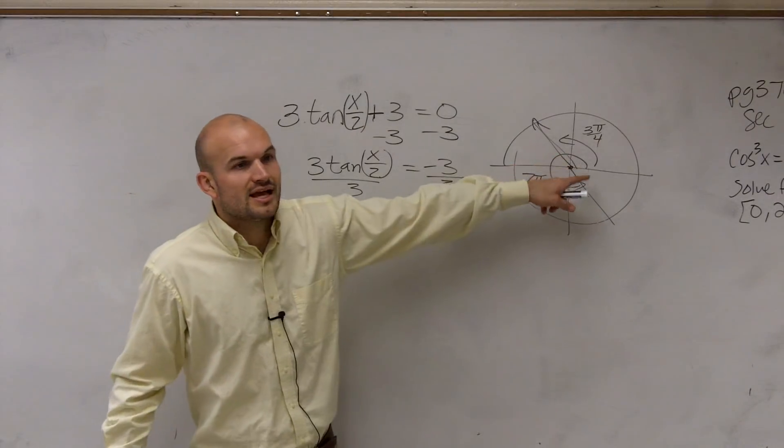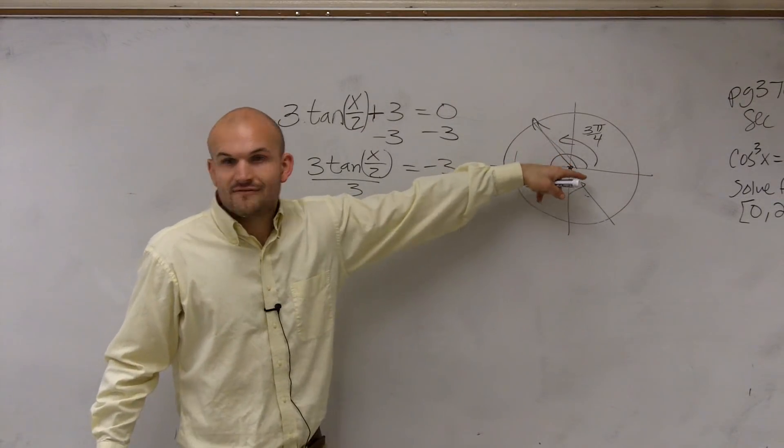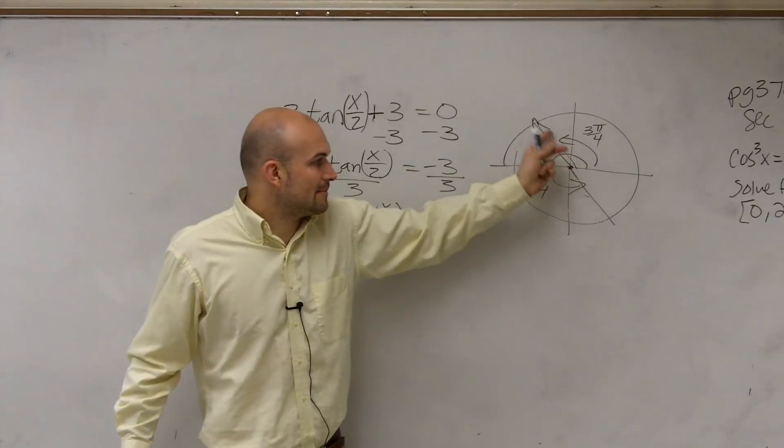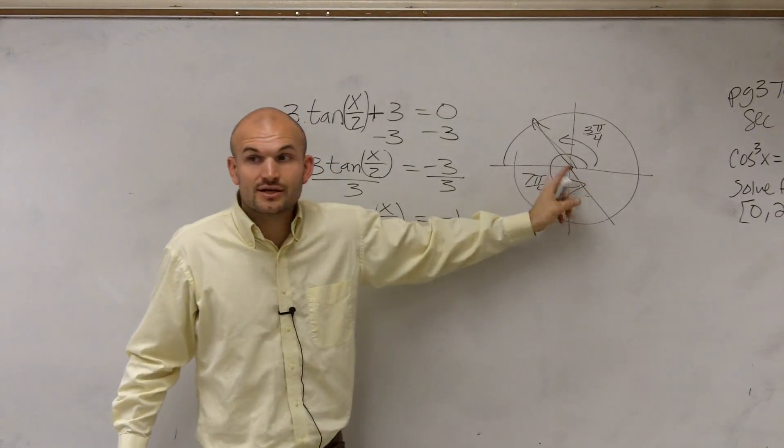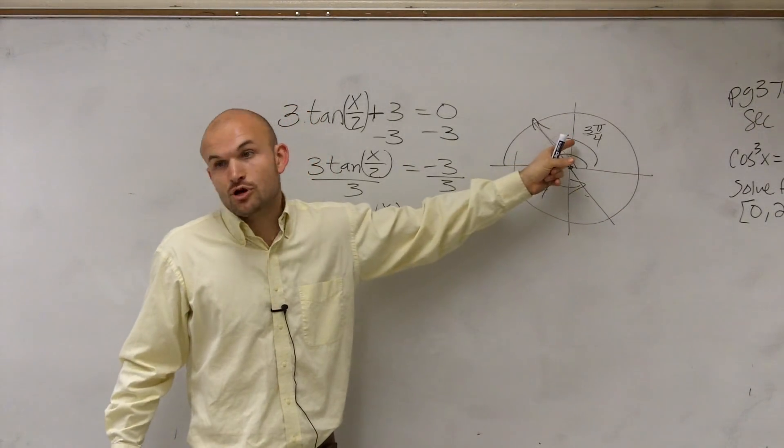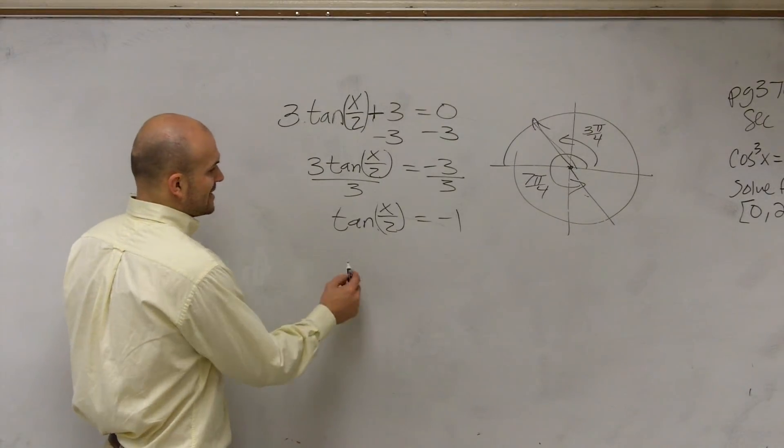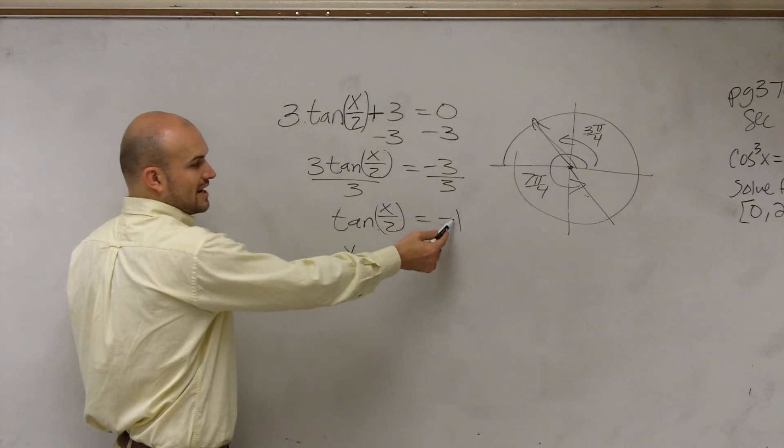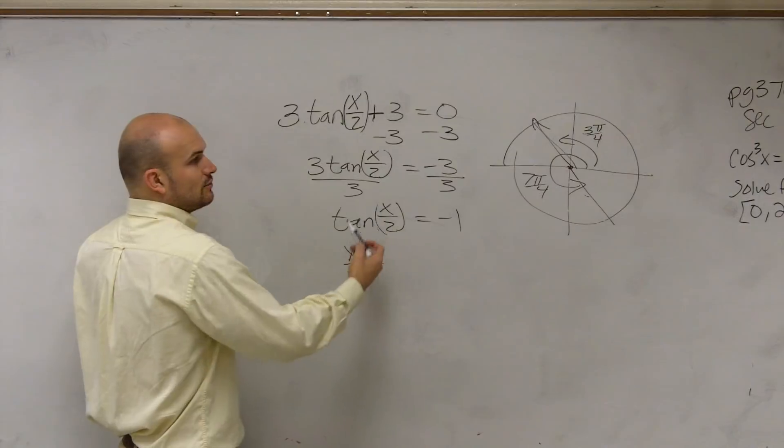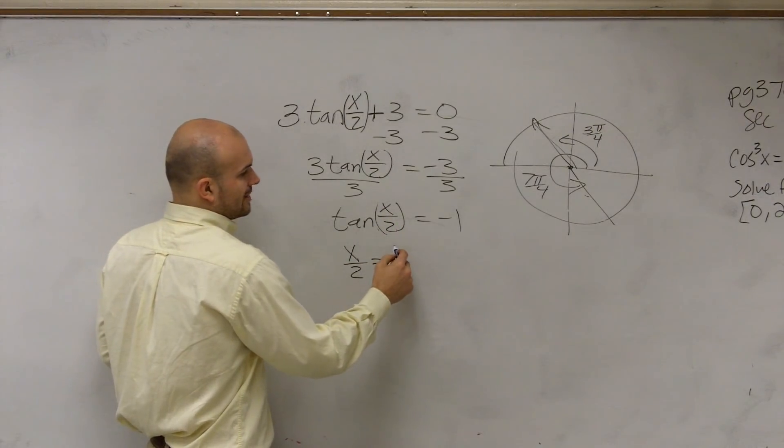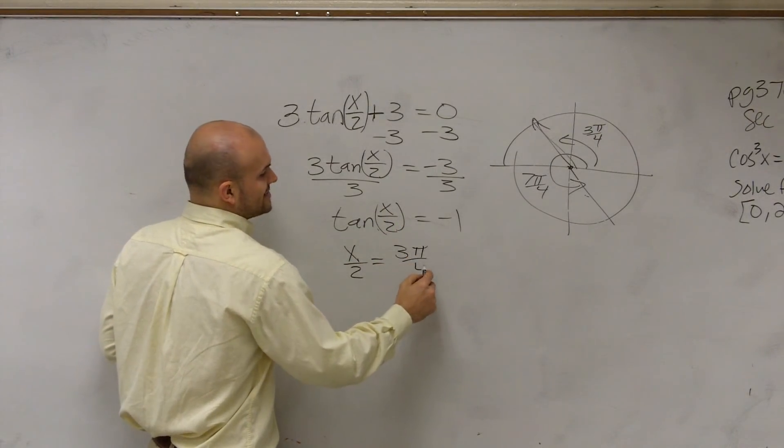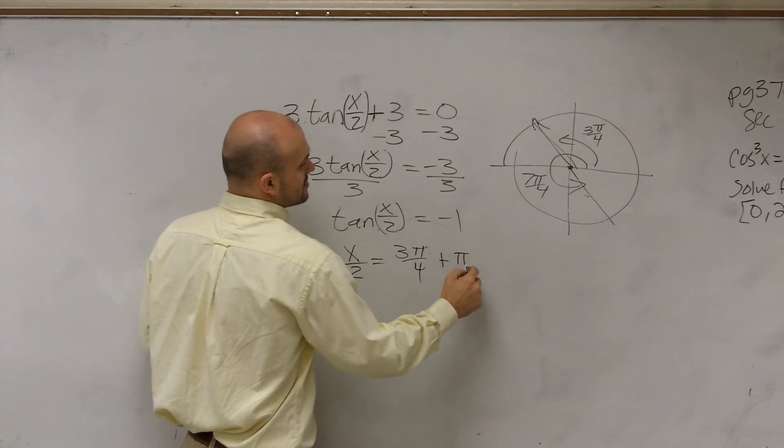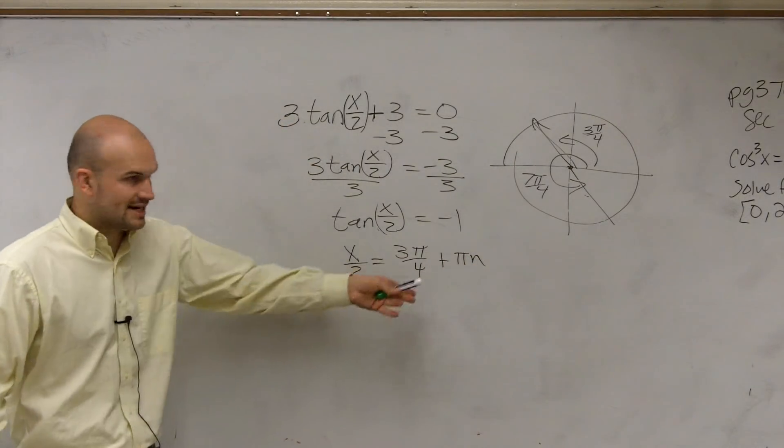But what we noticed was, if we have 3 pi over 4, if I just keep on adding pi to it, I'm going to include this answer, and I'll include the next one, since there's no constraint. So I can just say x divided by 2. So the tangent of x divided by 2, when it's equal to negative 1, x divided by 2 is now equal to an angle of the distance of 3 pi divided by 4 plus pi n. That is our answer.